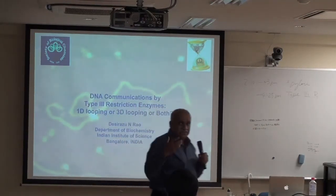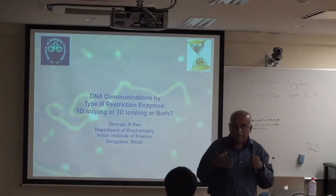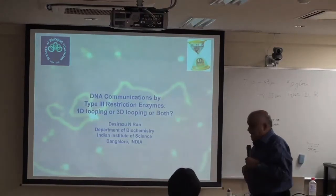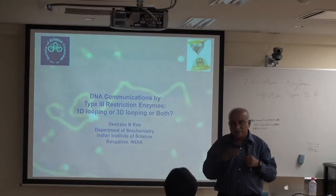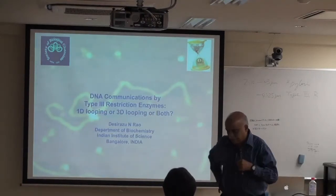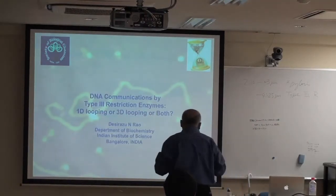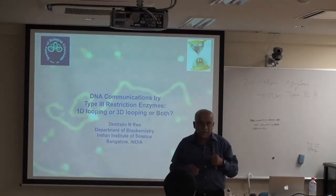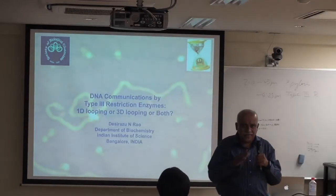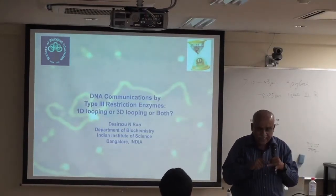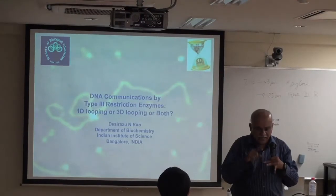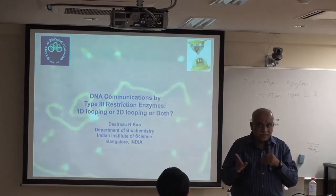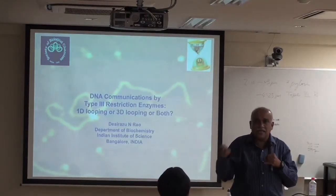We looked at type 3 restriction enzymes because our lab works on them. For a long time there was controversy about the co-factor requirements. Type 1 enzymes clearly require ATP, SAM, and magnesium to cut DNA. The type 3 enzymes required ATP, but it was believed that ATP was not hydrolyzed — unlike type 1 enzymes where ATP hydrolysis provides energy for DNA translocation.